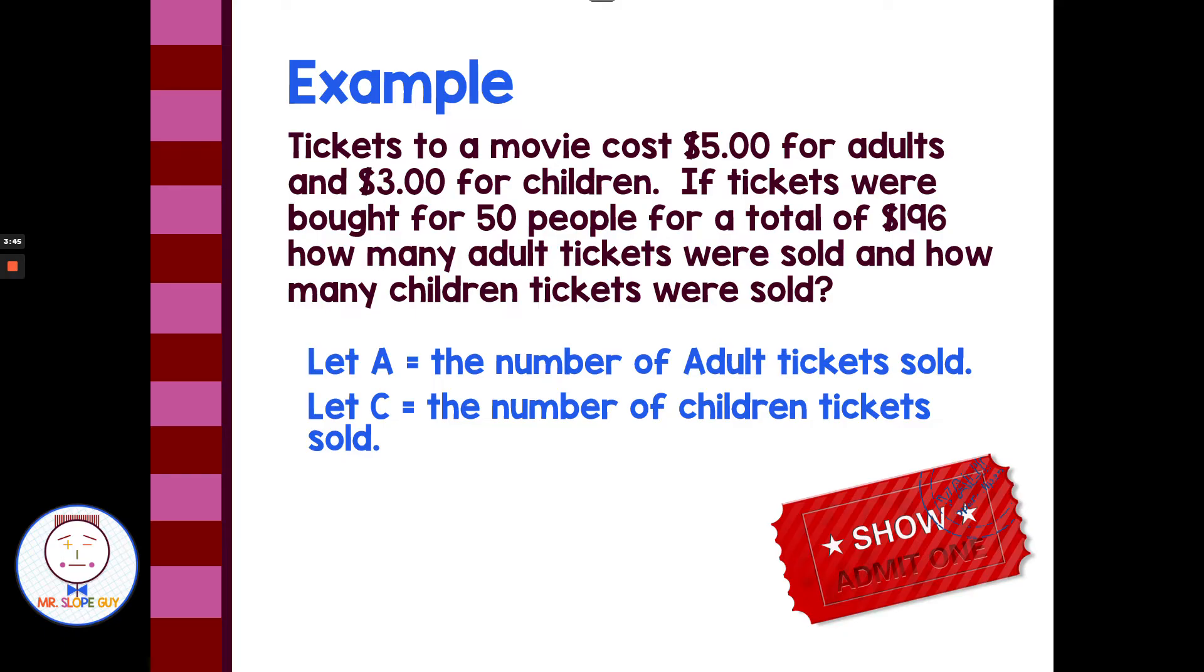Now we have to pull two equations from this word problem. Somewhere within this word problem, I need to be able to write two separate equations that include A and C. So what do we have first? I would start with if the tickets were bought for 50 people. So that's like the number of pigs plus the number of chickens added up to 30. We know that the total number of tickets has to add up to 50. So our adult tickets plus our children tickets has to add up to 50. So we get A plus C is 50. Then we have to take into account the value equation that adult tickets are a different price than the children tickets. Adult tickets are $5, children tickets are $3. So this is very similar to the pigs having four feet, chickens having two feet. Each adult ticket is going to multiply by five, each children ticket is going to multiply by three. And we're given a total of $196. So the value equation is 5A plus 3C equals 196.